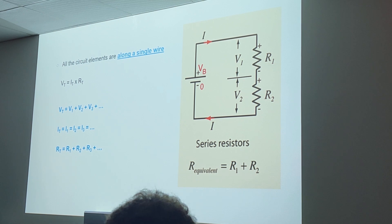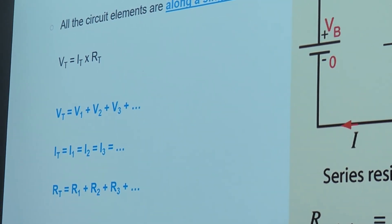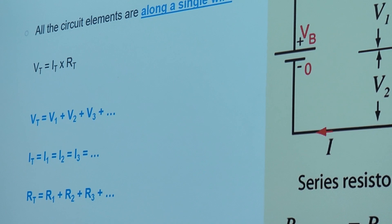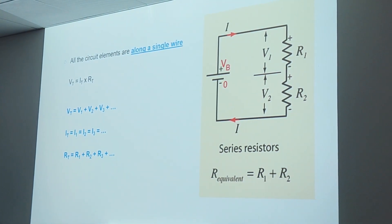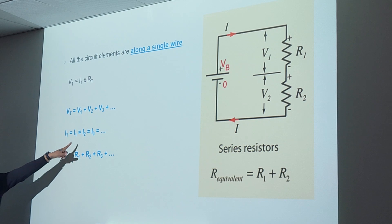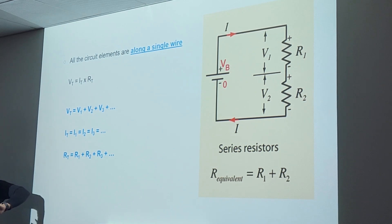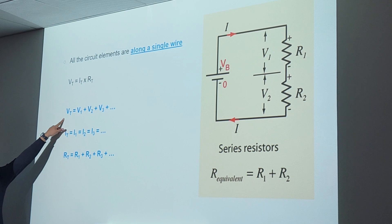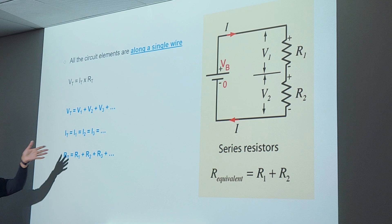We learned that V equals IR. The way we calculate things for series versus parallel is different. For series, everything is along a single wire. The way we calculate our total voltage is we just add it — if you have different values, you add them all up for total voltage. Current for a series circuit is going to be the same across the board — the same at every point. Resistance: you add everything up, just like you do voltage. The only difference is current — you're not going to add anything, because it stays the same throughout the circuit.